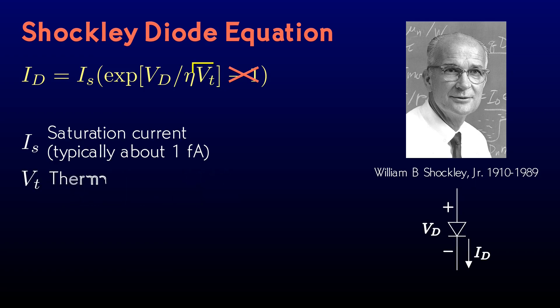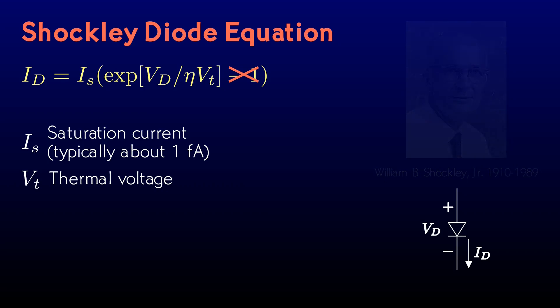V sub T is what's called the thermal voltage. Fortunately for us, V sub T is determined by fundamental physical laws. It's equal to Boltzmann's constant times the absolute temperature divided by the charge of the electron. That is, the absolute temperature times about 86 microvolts per kelvin. About 25 millivolts at room temperature.